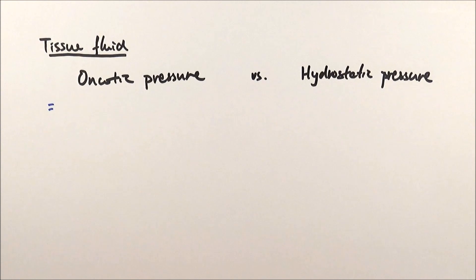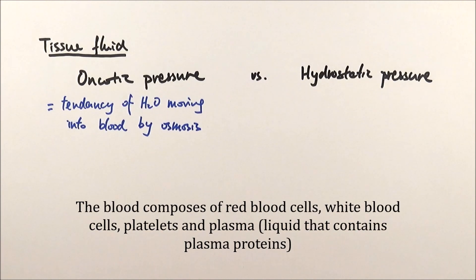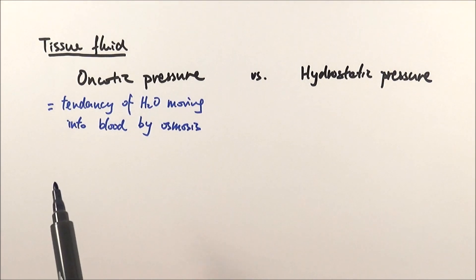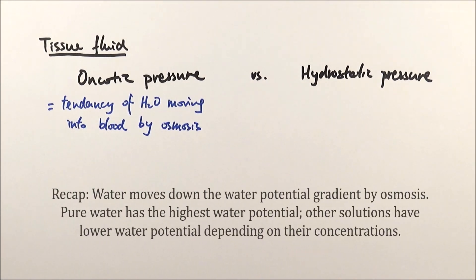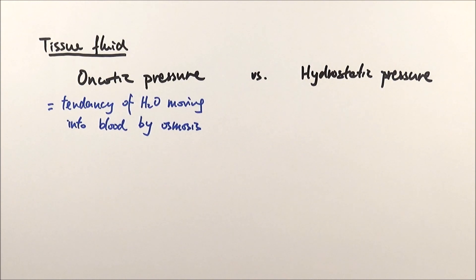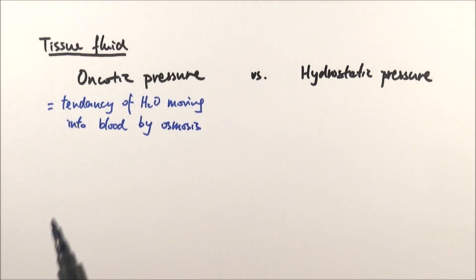Oncotic pressure is basically the tendency of water to move into the blood by osmosis. In the blood there are red blood cells, white blood cells, platelets, and plasma. Inside the plasma there are plasma proteins which cause oncotic pressure, lowering the water potential in the blood and causing water to move in certain directions, generating an osmotic effect. Do not mix up osmotic effect with oncotic pressure—they are two different things.